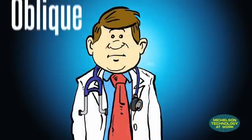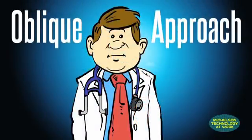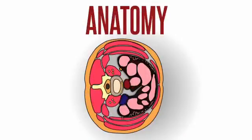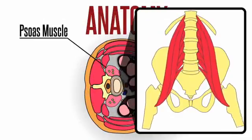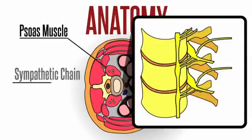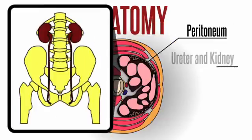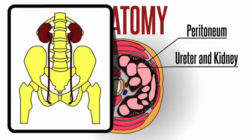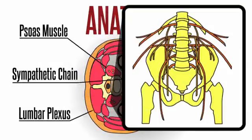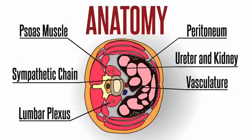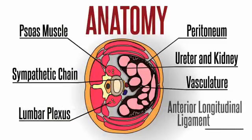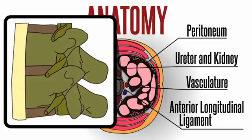When considering an oblique approach, we have to consider the anatomy — specifically the peritoneum, the psoas muscle, the sympathetic chain, the ureter and kidney, the lumbar plexus, the vasculature in the lumbar region, and the anterior longitudinal ligament, or ALL.